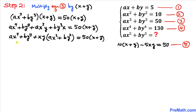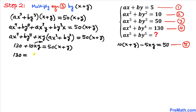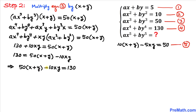So this equation becomes 130 + 10xy = 50(x + y). Let's move 10xy to the other side: 130 = 50(x + y) − 10xy, which we can also write as 50(x + y) − 10xy = 130. Let's call this equation number 6.